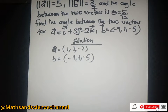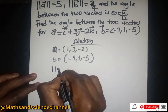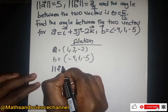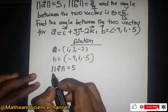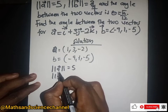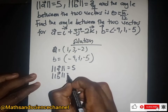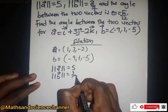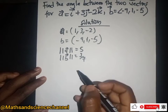We are also given the magnitude of vector a to be 5, and the magnitude of vector b to be 3√7. Now to find the angle between them, we proceed with the formula.